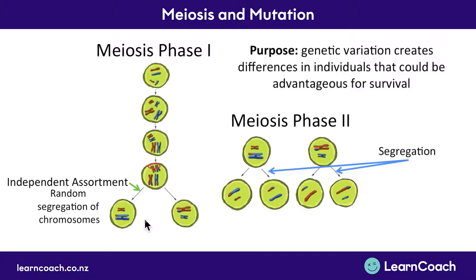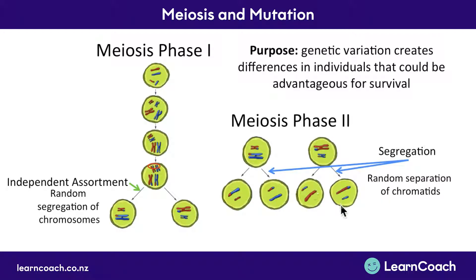The second thing you need to know is segregation. This is the random separation of these two chromatids when they separate in meiosis phase 2 to create four separate daughter cells.